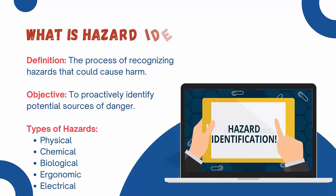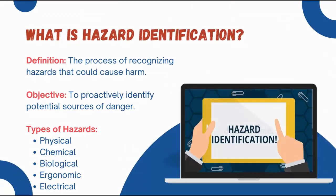What is Hazard Identification? Hazard Identification is the process of recognizing hazards that could cause harm. The main goal is to proactively identify potential sources of danger. Hazards can be physical, chemical, biological, ergonomic, or electrical.